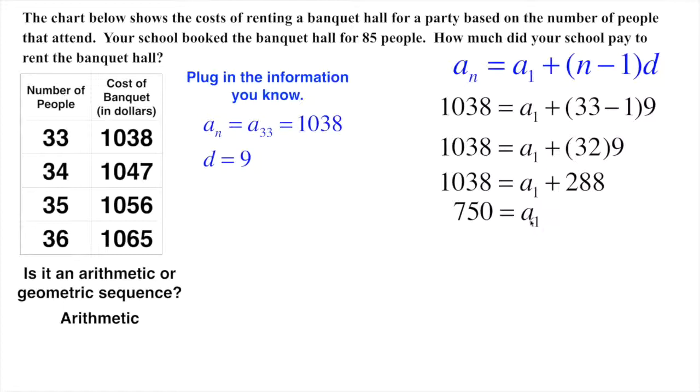That helps us because now that we know a of 1, we can easily find our formula. Our formula for this one, our difference is 9, a of 1 is 750. Now, going back up here to this problem, we're asked to find how much it costs for 85 people. In other words, what's the 85th term in this sequence?